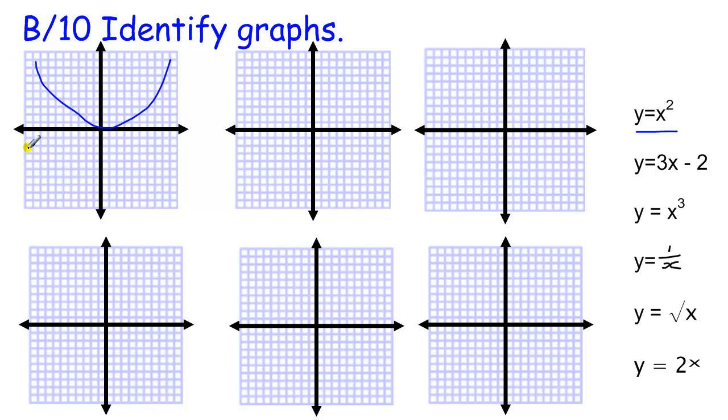Obviously, that graph can be moved up and down, left and right, depending on what else is added to it. But if it's got an x squared in it, that's the highest power, it's going to have a U shape.